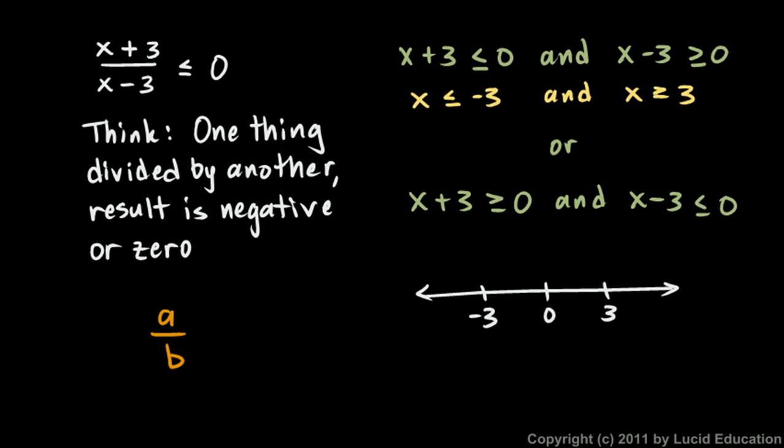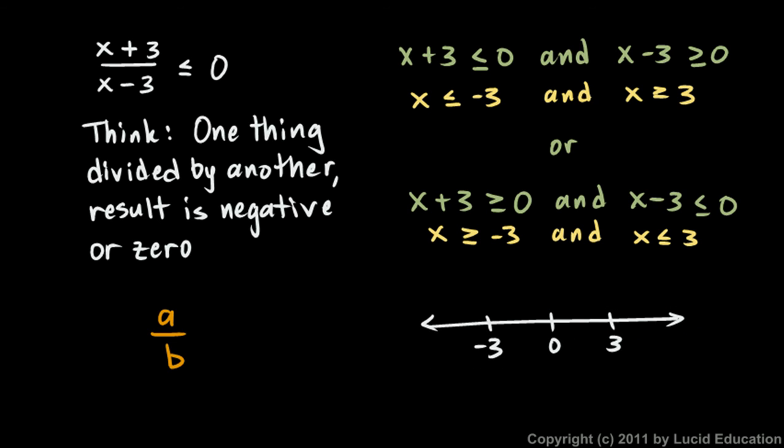So we don't get any answers from that information, but we will from this. Let's work out these two. This one here, x plus three is greater than or equal to zero. That's just like saying x is greater than or equal to negative three, and this is like saying x is less than or equal to three. I'm going to scoot this down just a little. Okay, so where are all the numbers that are greater than negative three and less than three? Well, that's all the numbers in between negative three and three. Any number in there is greater than negative three and less than three.